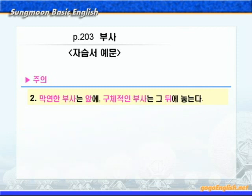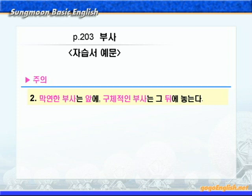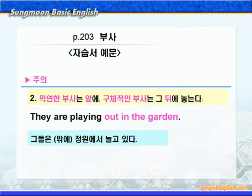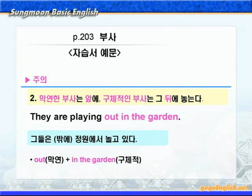주의할 점이 하나 더 있습니다. 막연한 부사와 구체적인 부사가 나오면 막연한 부사는 앞에, 그리고 구체적인 부사는 그 뒤에 놓아주면 되겠습니다. 자습서 예문을 보면서 설명하죠. '그들은 정원에서 놀고 있다' 이런 말인데요. 'Out in the garden'을 보세요. 막연히 out이라고 말해놓고 그 뒤에 구체적으로 in the garden 이렇게 나왔습니다. 막연한 부사와 구체적인 부사가 같이 왔을 때는 막연한 부사를 앞에 두고 구체적인 부사를 그 뒤에 둡니다. 뭐 뒤에 뭐가 온다고 외우는 것보다는 예문 중심으로 익혀두는 것이 훨씬 좋습니다.